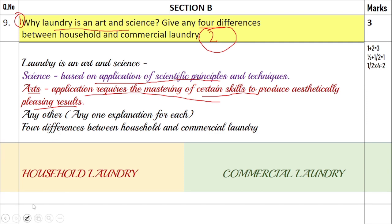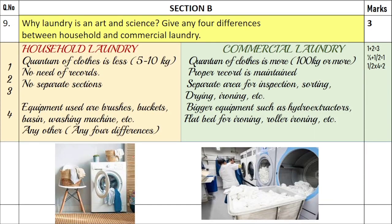Now, the differences between household laundry and commercial laundry: household is on a smaller scale and commercial is on a larger scale. At home you have one washing machine of about 5 to 10 kg capacity, whereas in a commercial laundry the machines can handle around 100 kg or more depending on the size of the laundry.